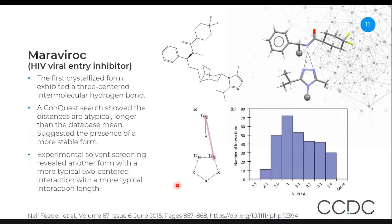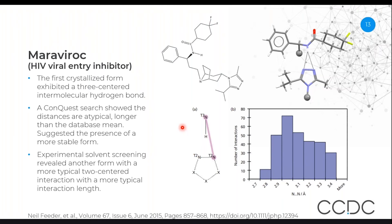To briefly summarize some of the findings: we have the Maraviroc compound, which is an HIV viral entry inhibitor. In this case, the first crystallized form exhibited a three-centered hydrogen bond, which was deemed unusual. We searched our database for similar sorts of fragments and found that the donor-acceptor distance for this was actually very unusual when compared against a histogram of similar hydrogen bonds.